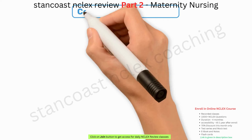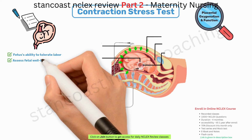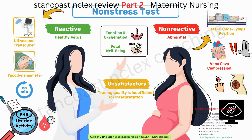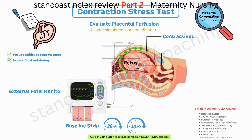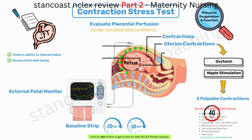The contraction stress test (CST) is performed to assess placental oxygenation and function, evaluate the fetus's ability to tolerate labor, and assess fetal well-being. During this test, the fetus is exposed to contractions to evaluate placental perfusion under simulated labor conditions; it is typically performed when the non-stress test yields abnormal results. An external fetal monitor is applied, and a baseline strip of 20 to 30 minutes is recorded. Uterine contractions are induced through oxytocin administration or nipple stimulation until three palpable contractions with a duration of 40 seconds or more in a 10-minute period are achieved, with frequent maternal blood pressure readings taken.